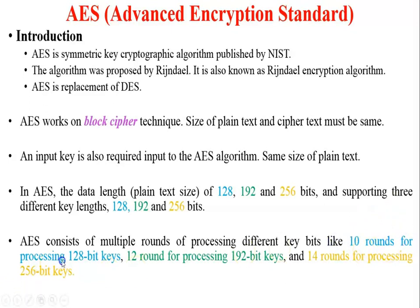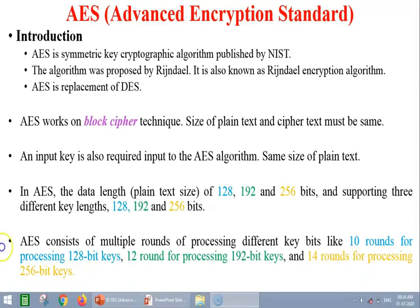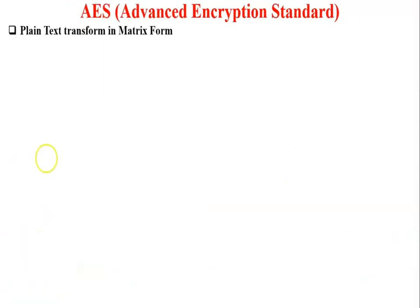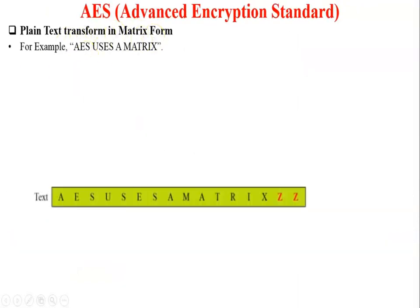AES consists of multiple rounds of encryption process. For 128-bit encryption using a 128-bit key, you must perform 10 rounds of processing. If you use a 192-bit key, you must perform 12 rounds of encryption, and if you use a 256-bit key, there are 14 rounds of encryption.